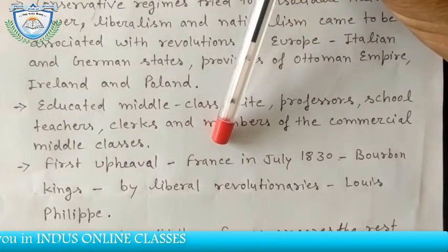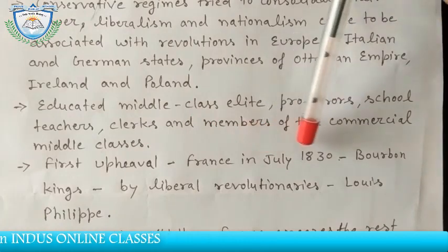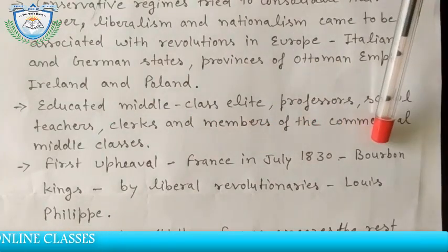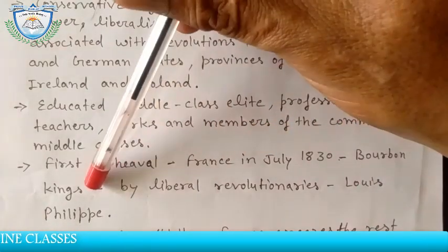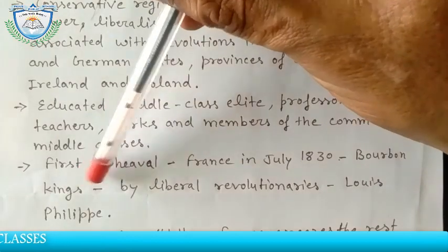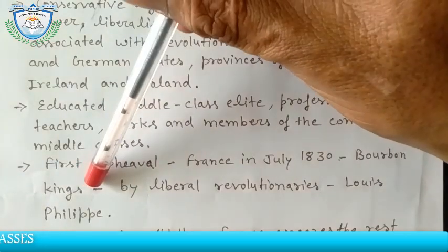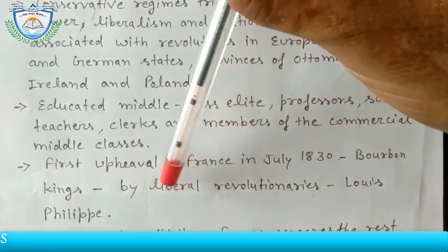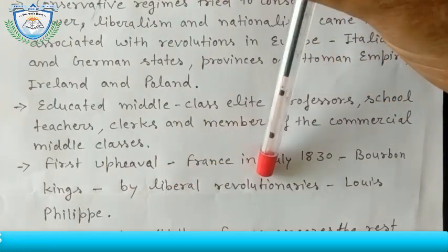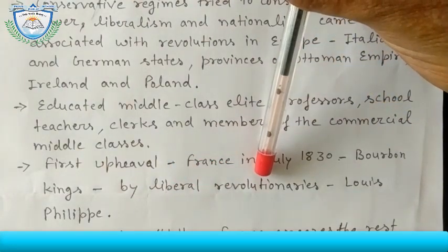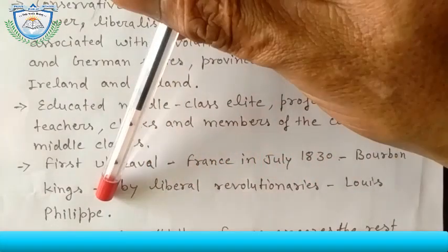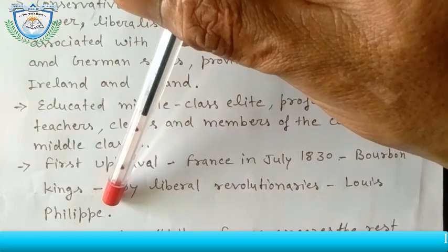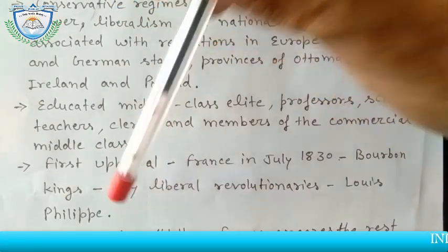The first upheaval — the first revolution — that took place was in France in July 1830, in which the Bourbon kings, who had been restored to power after the Vienna Congress, were removed by liberal revolutionaries, and Louis Philippe was made the head of the country under a constitution.